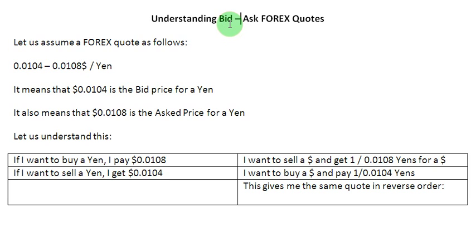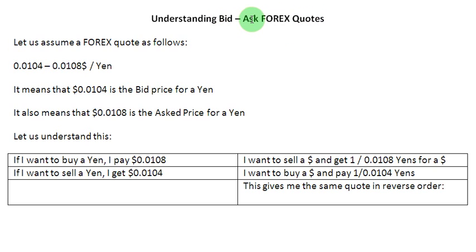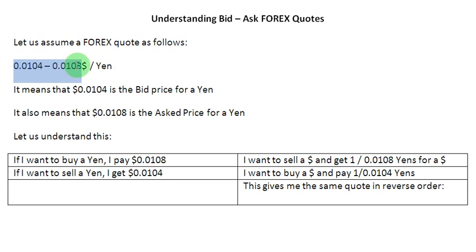Ladies and gentlemen, welcome to this screencast in which we are going to understand foreign exchange quotations when they are represented in terms of bid and ask prices. For that purpose, we have this Forex quote with us: 0.0104-0.0108 dollars to a yen.